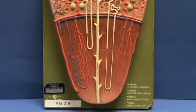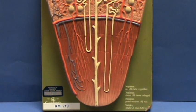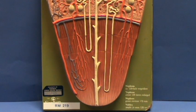These vessels are going to help maintain the osmotic gradient within the pyramid. And these straight vessels are referred to as the vasa recta.